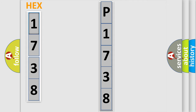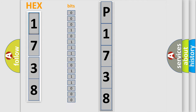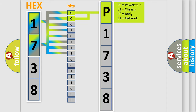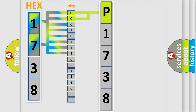The error code is split into two bytes consisting of 16 bits. One bit is the basic unit that each computer works with. The bit has two logical states: zero, low level, and one, high level. By combining the first two bits, the basic character of the error code is expressed.